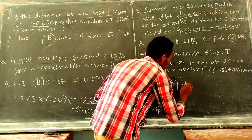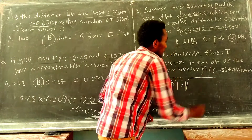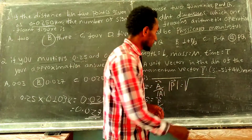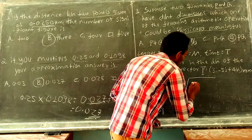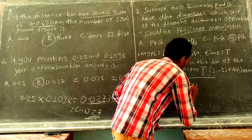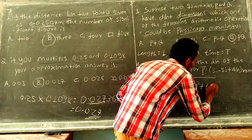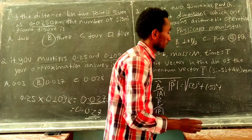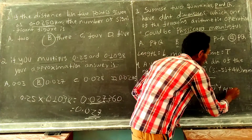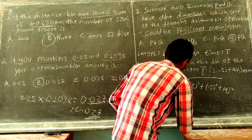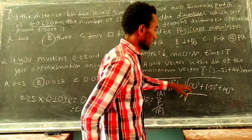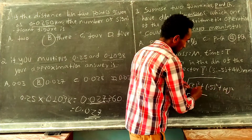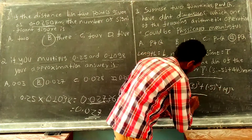The magnitude is the square root of the sum of squares of each component: 3 squared is 9, plus 5 squared is 25, plus 4 squared is 16 — that gives us the square root of 50, which is 5 root 2.